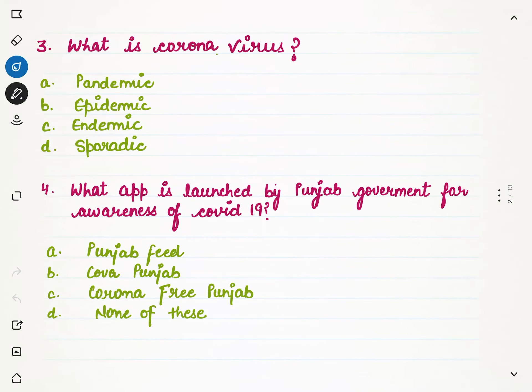The next question is: what is coronavirus — Pandemic, Endemic, Epidemic, or Sporadic? The correct answer is Pandemic.